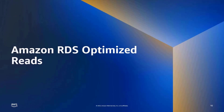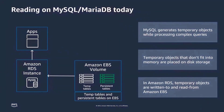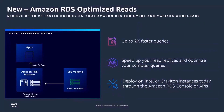Now that we've talked about how RDS for MySQL users write to their databases and how we've improved that process, let's talk about accelerated query processing on RDS. Before we get into Optimized Reads, let's talk about how reading on MySQL and MariaDB happens today. Ordinarily, when MySQL or MariaDB process complex queries, such as those that involve grouping or sorting, they will generate temporary objects. When these objects don't fit into memory, they are moved to disk storage — in the case of RDS, that means the temporary objects get written to or read from Amazon Elastic Block Store. We came up with Amazon RDS Optimized Reads, which provides up to 2x faster query processing for complex queries that utilize temporary tables.